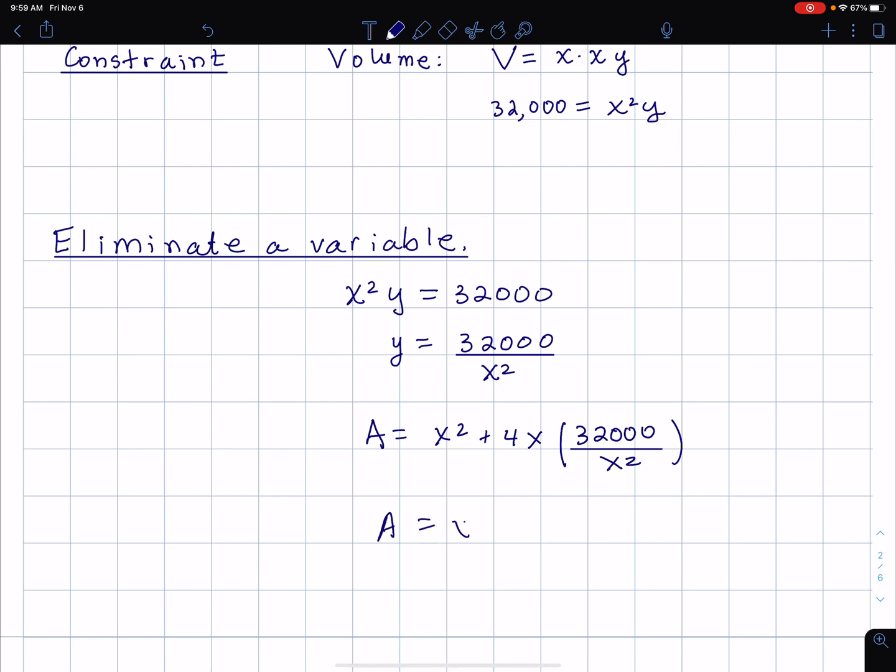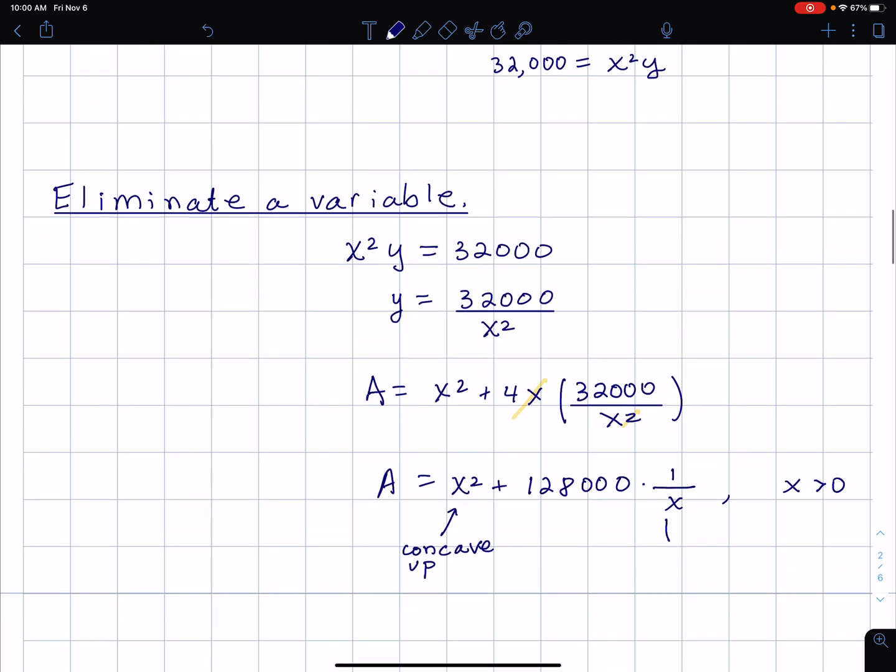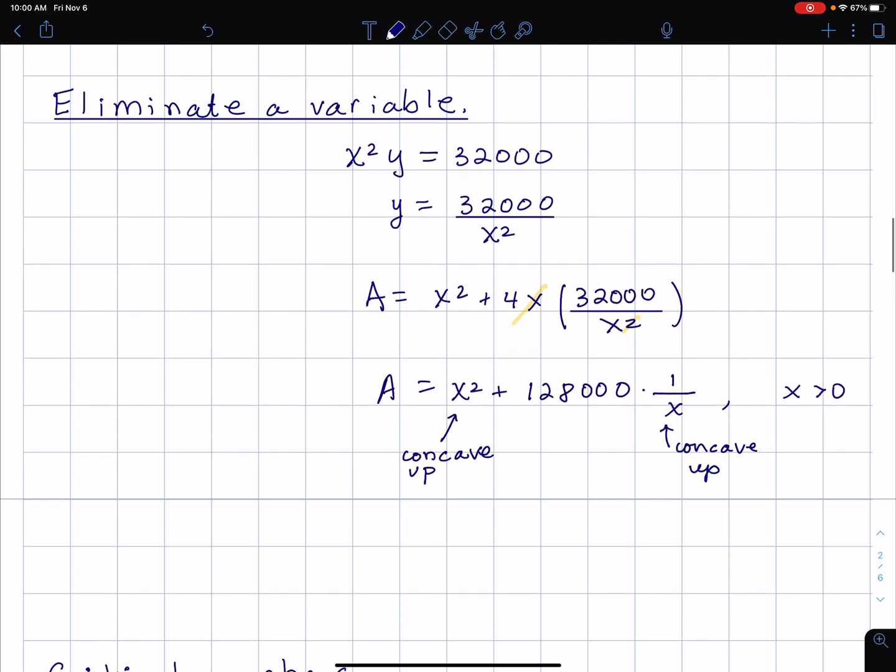We see that A equals x squared plus 4 times 32 is 128 with three zeros, and then there's cancellation with x and the squared. So that gives 128,000 times one over x. That's our area formula. I'm going to note that x squared is concave up because I know what a parabola looks like. This is for x greater than zero. One over x is also concave up when x is greater than zero.